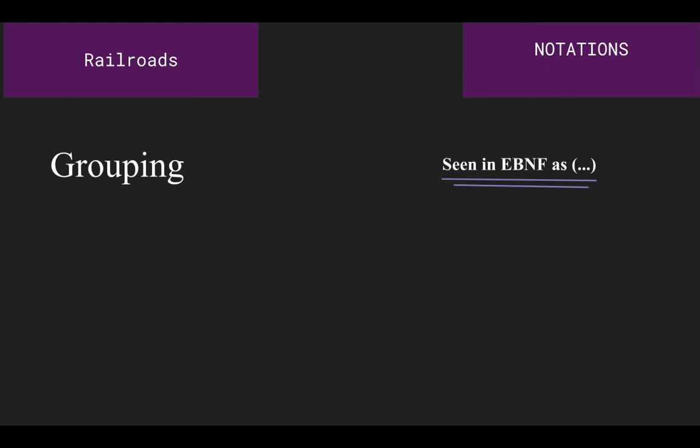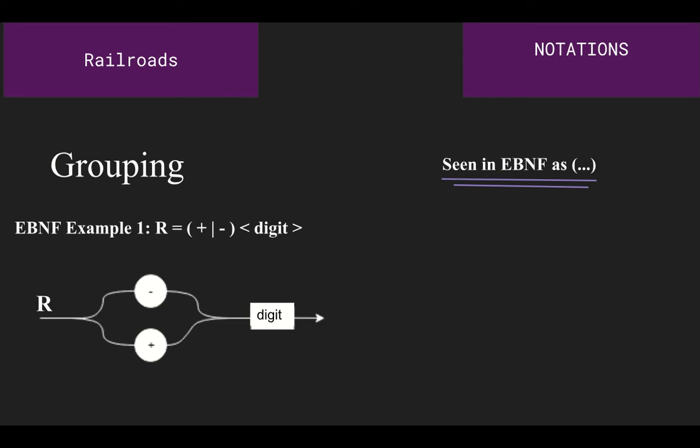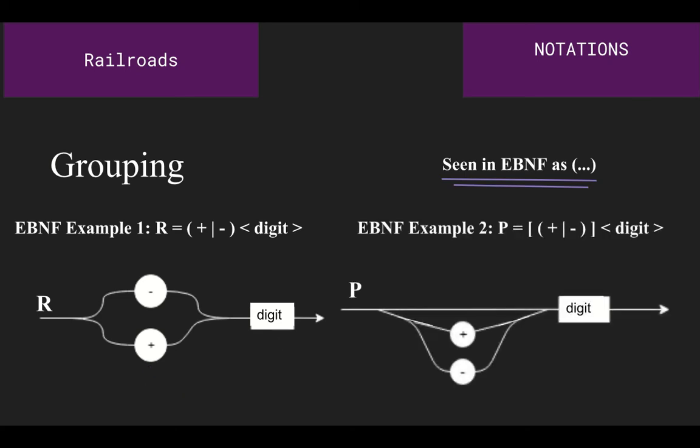For grouping to occur in a railroad diagram, there can be separate curved lines that detach from the main line, which allows for the terminal or non-terminal statement to be possibly called. As seen in the first example, it gives the choice of either a plus or minus integer to be chosen before the digit is selected. Some of the outputs in this railroad include R equals negative digit and R equals positive digit. But for the second example, there is an option for none of the grouping terminals to be used and only for a digit to be selected. Some of the outputs for this example would be P equals digit, P equals positive digit, and lastly, P equals minus digit.